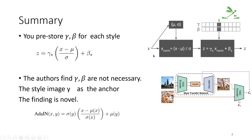In summary, this paper is elegant in its simplicity. We don't need extra learnable parameters for the mean and standard deviation of the style y, because feeding the style image directly into the adaptive instance normalization layer yields the standard deviation and mu. This removes the need for any extra learnable parameters.